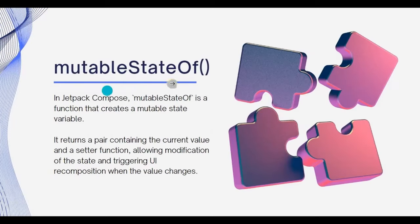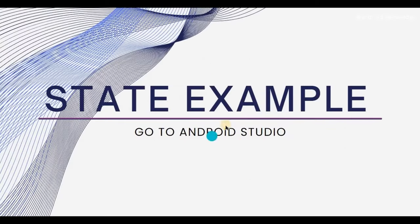Next is mutableStateOf. It's a part of mutable class. As the definition says, it is a function that creates a mutable state variable, which means a variable that can be further modified. It returns a pair containing the current value and a setter function, that ultimately means allowing modification of the state and triggering UI recomposition when the value changes. Theory clear.